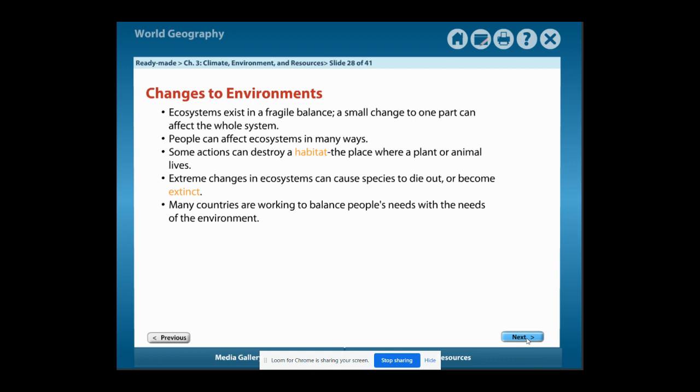Changes to Environments: Ecosystems exist in a fragile balance. A small change to one part can affect the whole system. People can affect ecosystems in many ways. Some actions can destroy a habitat.